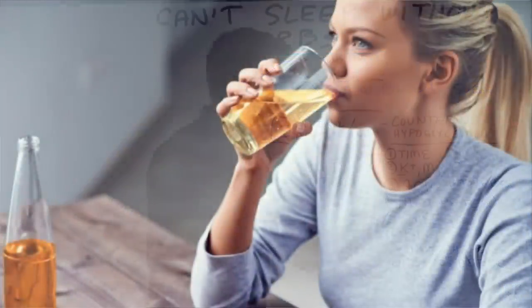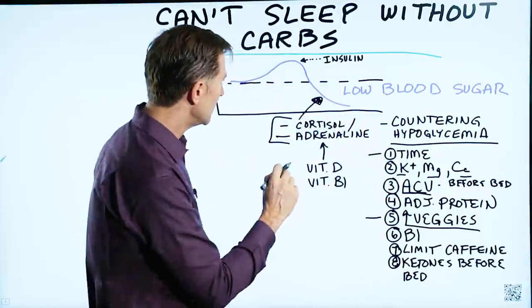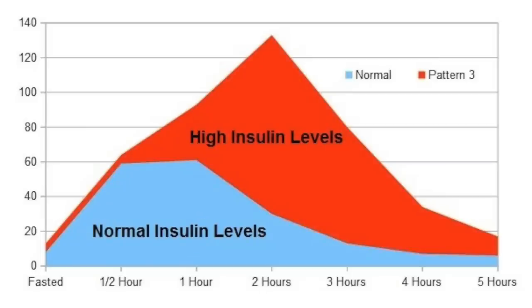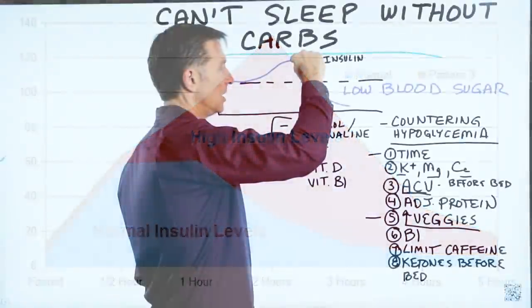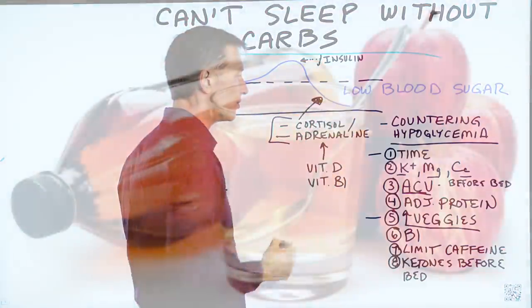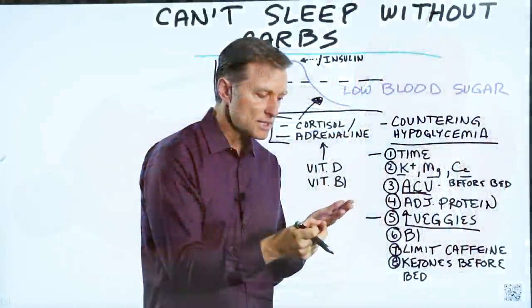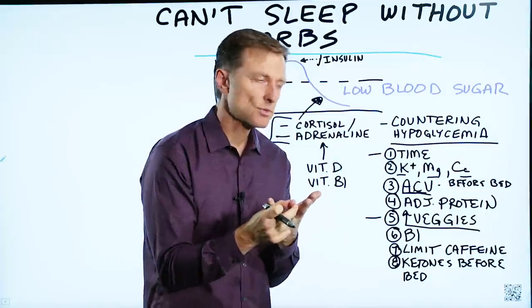Now apple cider vinegar before bed is really good because this can help stabilize not just blood sugars, but it has the ability to lower insulin. And if you have lowered insulin, you're not going to get this massive push into the hypoglycemic range. So apple cider vinegar helps blood sugars, it helps reduce insulin, and improves insulin resistance.